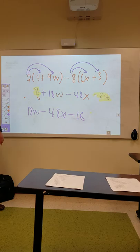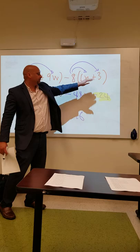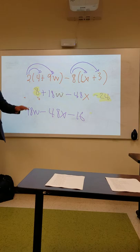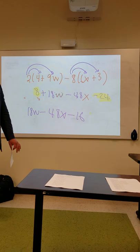Let's look at it again. 2 times 4 is 8. 2 times 9w is 18w. Negative 8 times 6x is negative 48x. Negative 8 times 3 is negative 24. Combine the things that are alike. The only things that are alike are these numbers, 24 and 8.